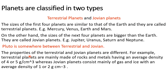The properties of terrestrial and Jovian planets are quite different. Terrestrial planets — Mercury, Venus, Earth, and Mars — are mainly made of rocks and metals, having an average density of four to five grams per centimeter cubed. Whereas Jovian planets — Uranus, Jupiter, Saturn, and Neptune — mainly consist of gas and ice with a lesser density, having an average density of one to two grams per centimeter cubed.